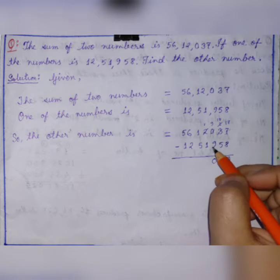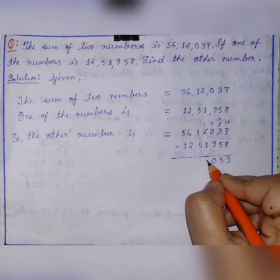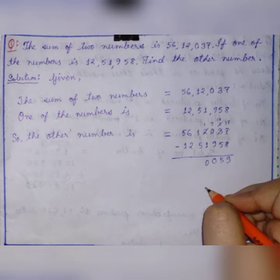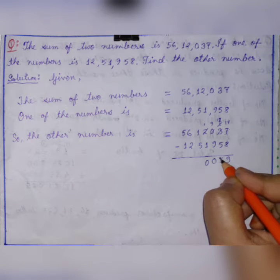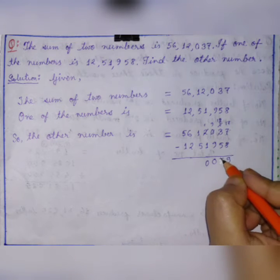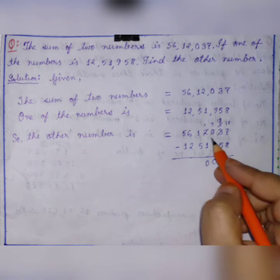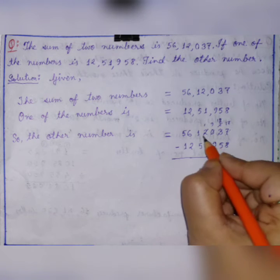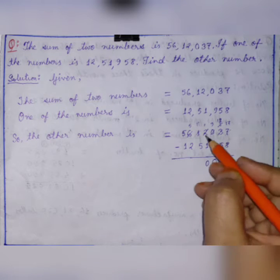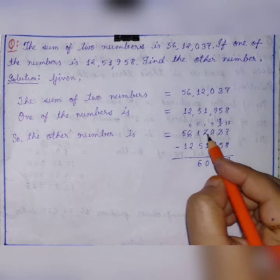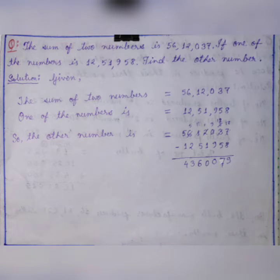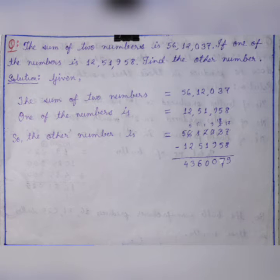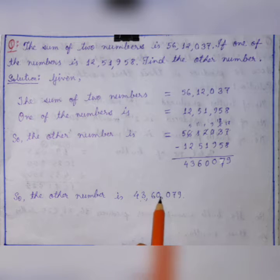Continuing: 1 minus 1 is 0. Then 9 minus 9 is 0, 1 minus 1 is 0. Again, 5 cannot be subtracted from 1, so it becomes 11 and the next digit becomes 5. 11 minus 5 is 6. Then 5 minus 2 is 3, and 5 minus 1 is 4. So the other number is 43,60,079.